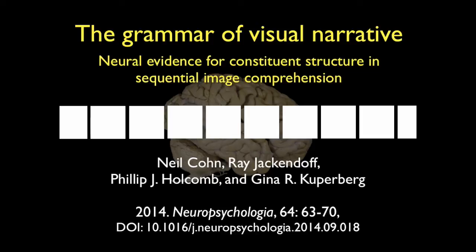This is a summary of the paper The Grammar of Visual Narrative by Neil Cohn, Ray Jackendorf, Phil Holcomb, and Gina Kuberberg.